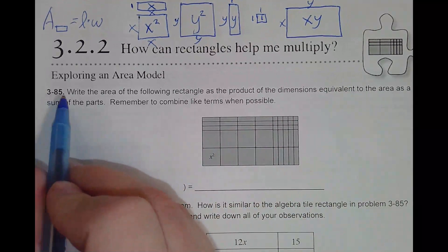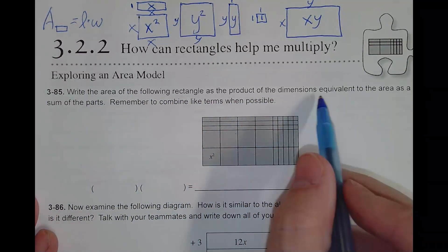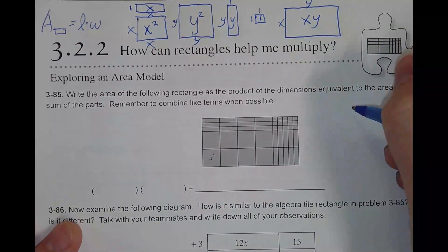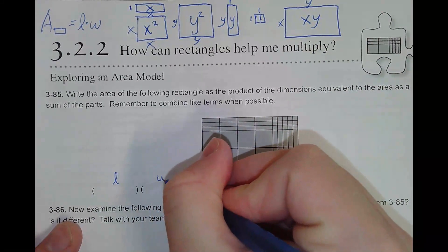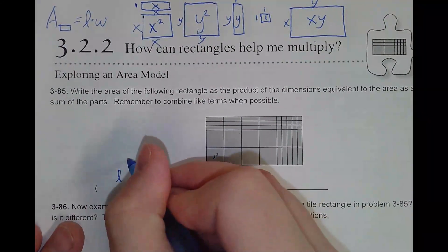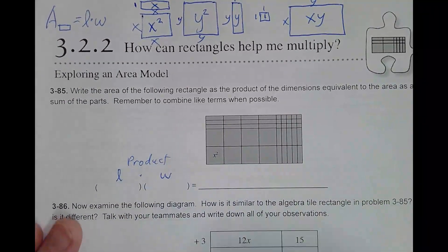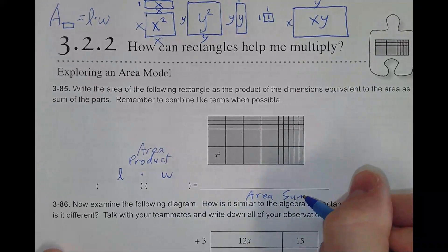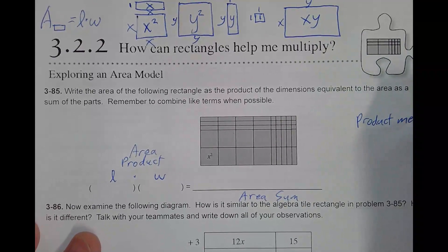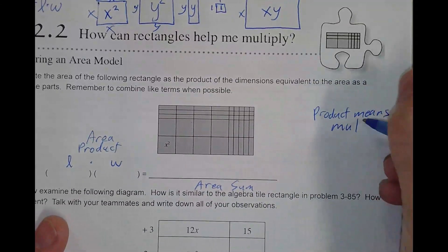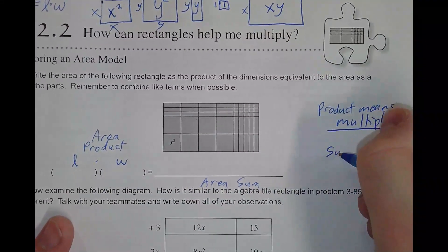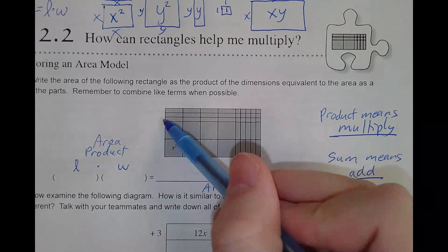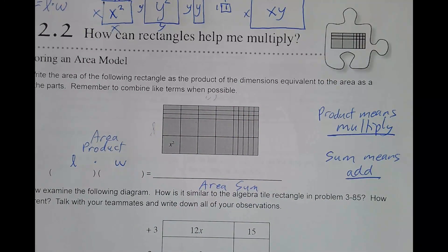Problem 385 says: write the area of the following rectangle as the product of the dimensions, equivalent to the area as the sum of its parts. Remember to combine like terms when possible. Essentially, we want length times width — that's the area product. And then the area sum. Product means multiply, sum means add. There are two types of areas: length times width, and adding up all the inside pieces.